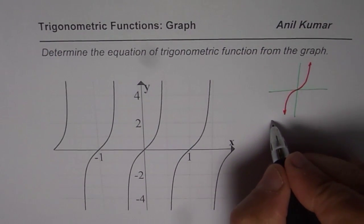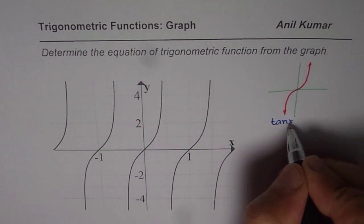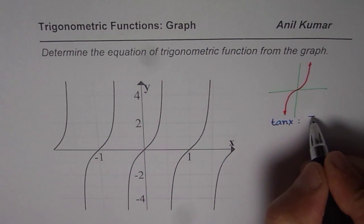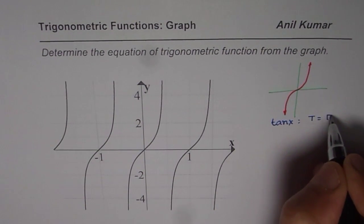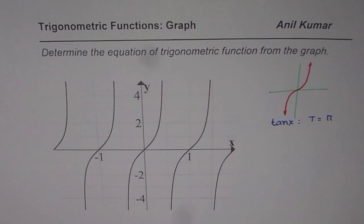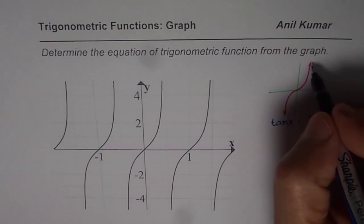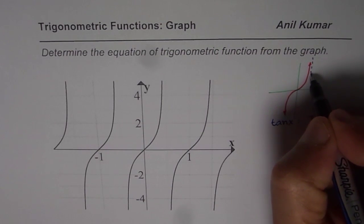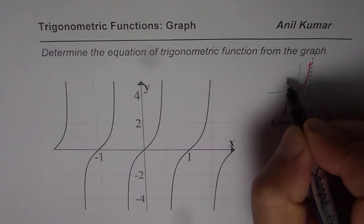Now for tan of x in general, as you know, the time period is what? Time period is π, so it repeats after every π. Now the asymptotes which are there, they are at plus π/2 and minus π/2. So this is the base function.